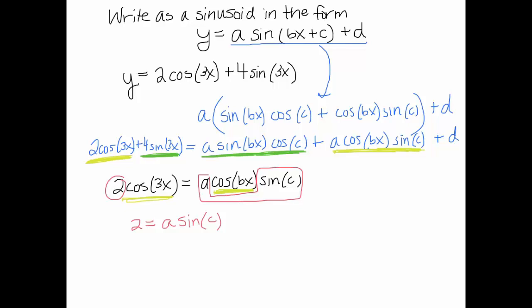Now let's go back to the other side, the green parts that matched up. 4 sine of 3x, that equals the a sine bx cos c. And the sine 3x matches up with the sine bx. And it's a good thing because b can't be two different numbers in this problem. So, the 4 must match up with the a cos c. So, 4 equals a cos c.